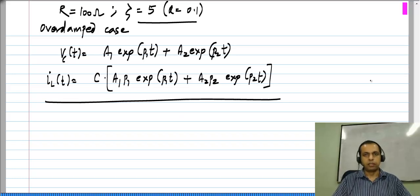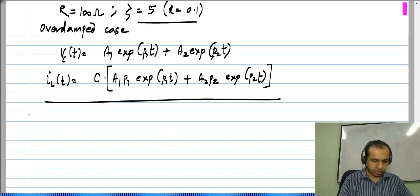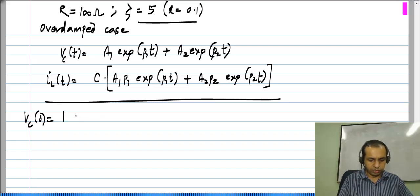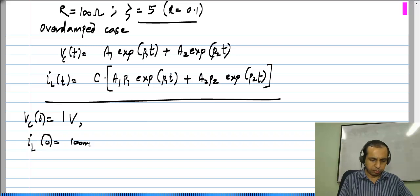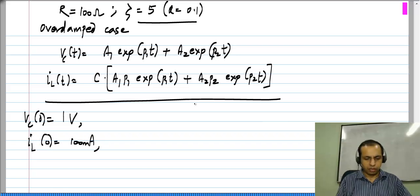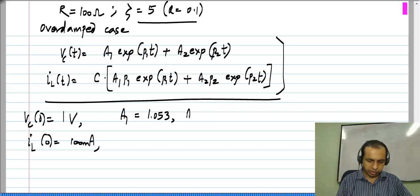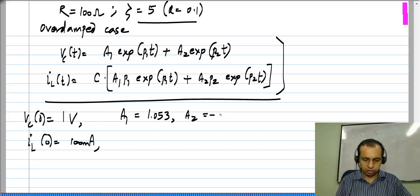And let us take some set of initial conditions. Let me say that V_c(0) is 1 volt and I_L(0) is 100 milliamps. Then you will get two linear equations here, from which you will find that A_1 will be 1.053 and A_2 will be minus 0.053.